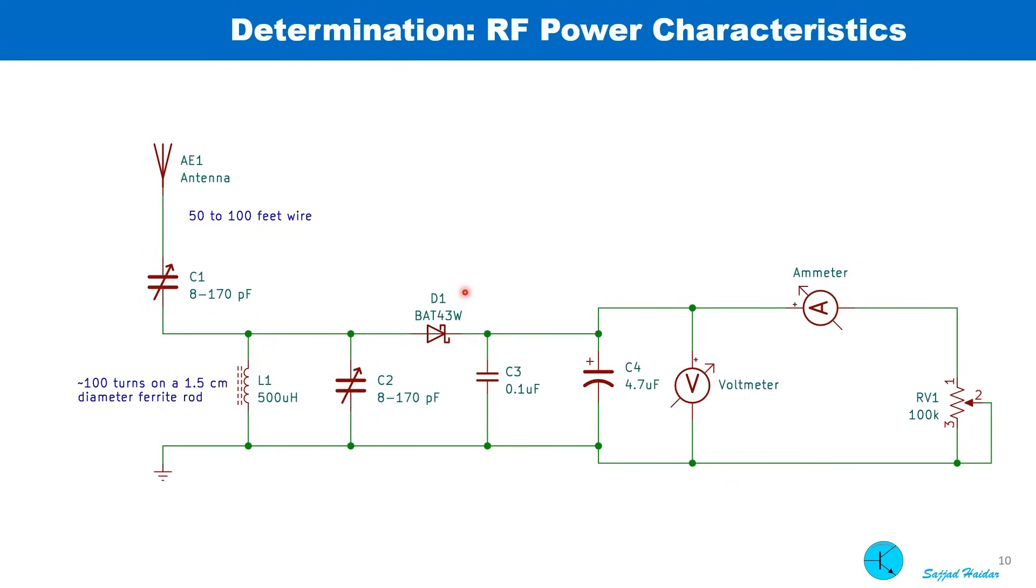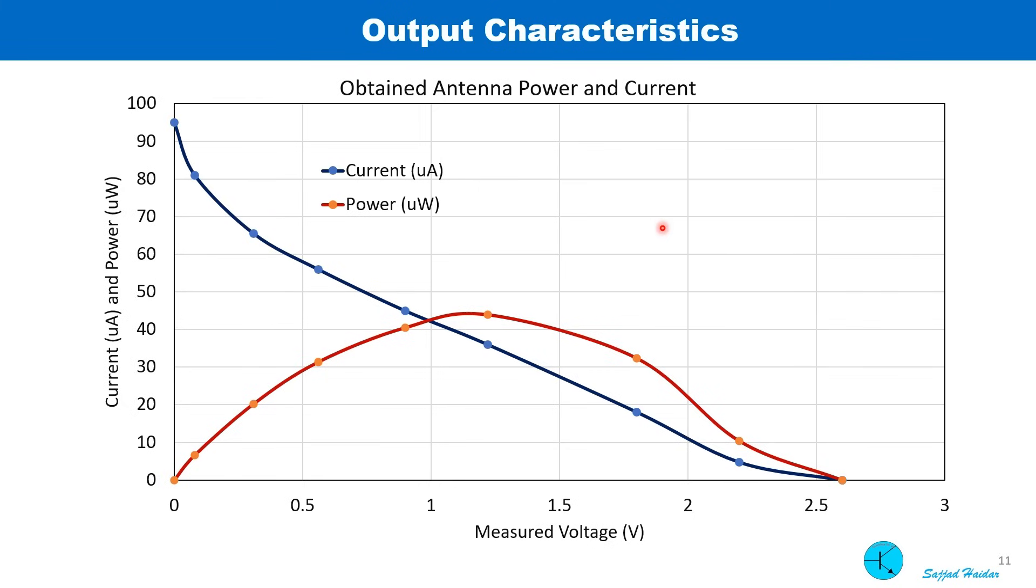To determine the power, I used this circuit, one voltmeter, one ammeter and a hundred kilo ohm variable resistor. Varying the hundred kilo ohm resistor, I got the following output characteristics. Maximum output voltage is around 2.6 volt. Maximum current is 95 microampere. And the maximum power is around 45 micro watt.